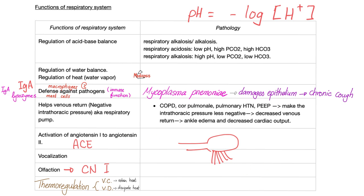The respiratory system is also responsible for thermoregulation, because you have tons of capillaries in your respiratory system. If you vasoconstrict those capillaries, you will retain heat. But if you vasodilate, you will evaporate and dissipate the heat. Why does your nose turn blue in harsh winter nights? It's because of severe vasoconstriction — your body is trying to retain heat, otherwise you will die from hypothermia.